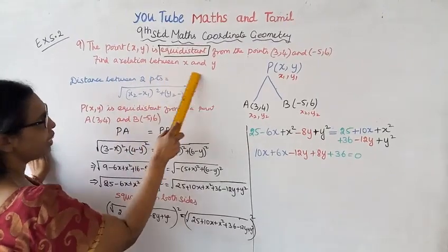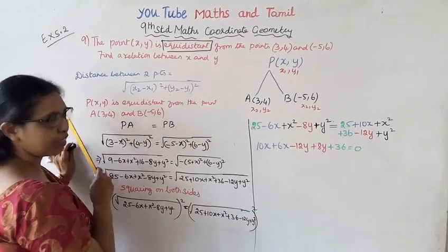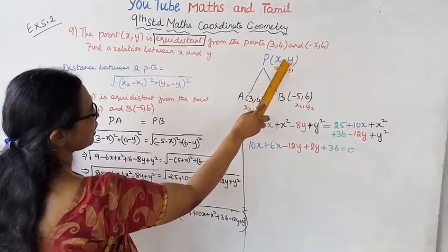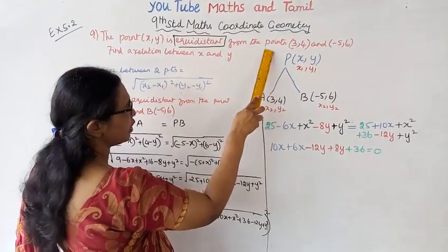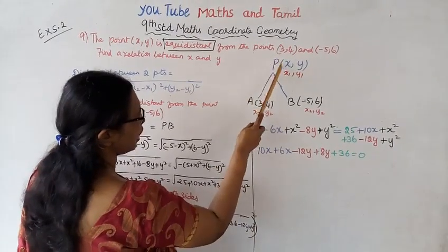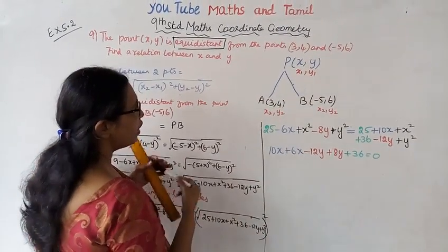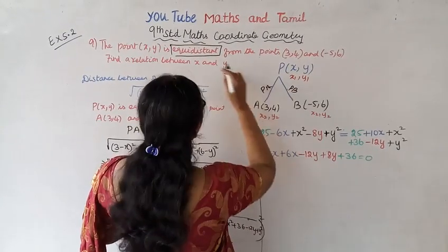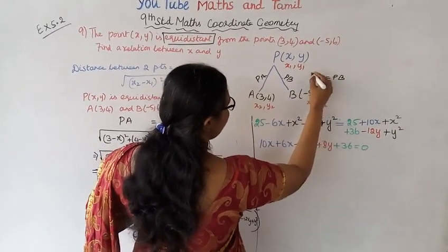Find the relation between x and y. We have to define the relation between x and y when point (x,y) is equidistant from the points (3,4) and (-5,6).